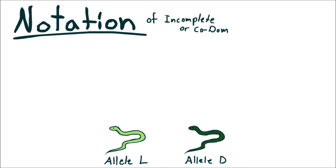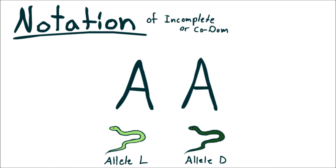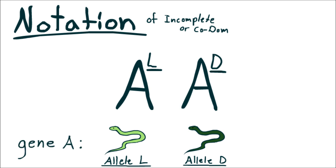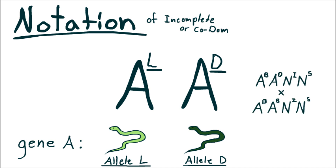As for notation, there are a few different systems you could use. One way to do it is two letters, each with a different superscript letter. You use the same large letter to signify the gene you're working with and the superscript for which allele. This is really helpful when you're crossing for different genes at the same time.